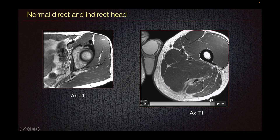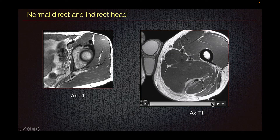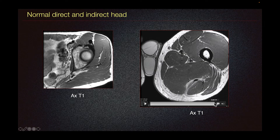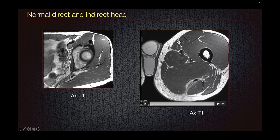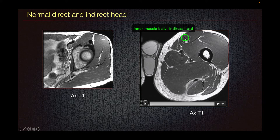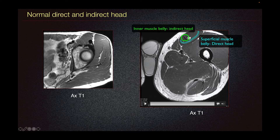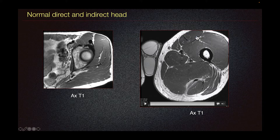The rectus femoris muscle is unique in that it forms a muscle-within-a-muscle configuration. The inner portion, or inner muscle belly, forms a bipennate configuration around the central aponeurosis. The inner muscle belly arises from the indirect head, whereas the superficial muscle belly, which envelops this inner muscle belly, comes from the direct head.